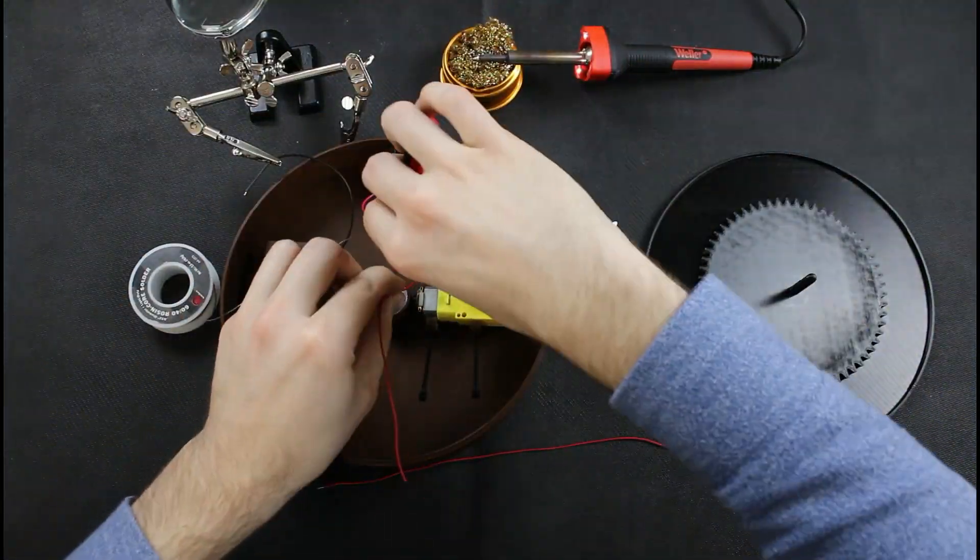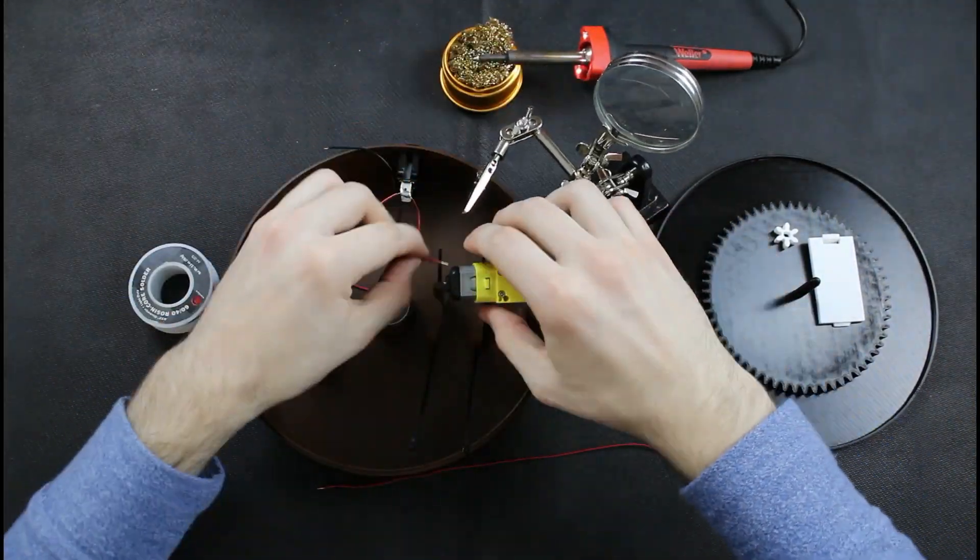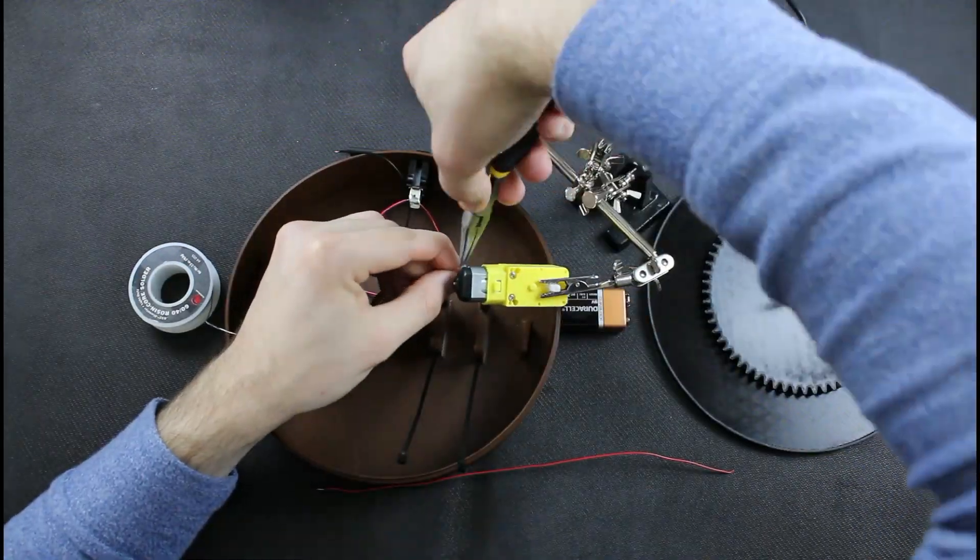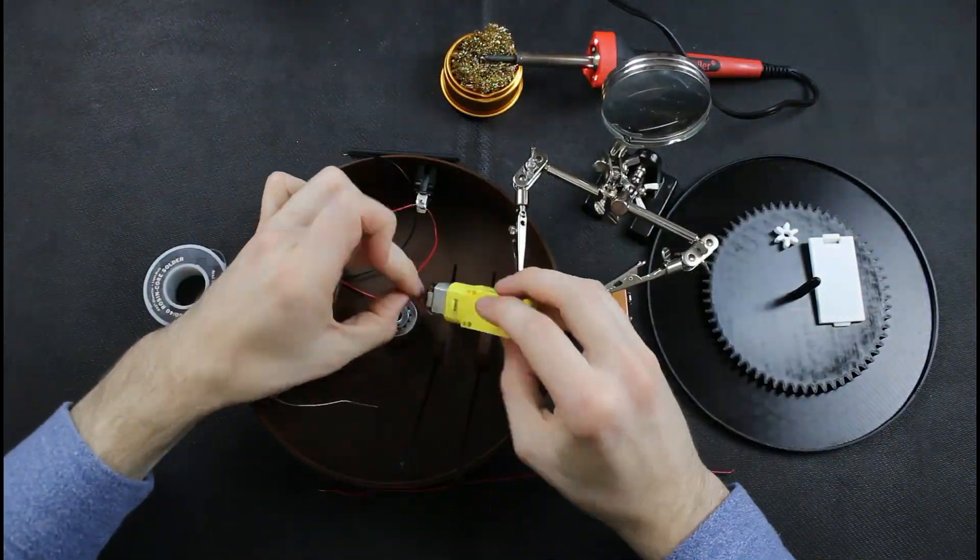Next I'm going to solder my spare wire to one of the ends of my DC motor. It doesn't really matter which side; the only difference will be counterclockwise versus clockwise rotation of the turntable.